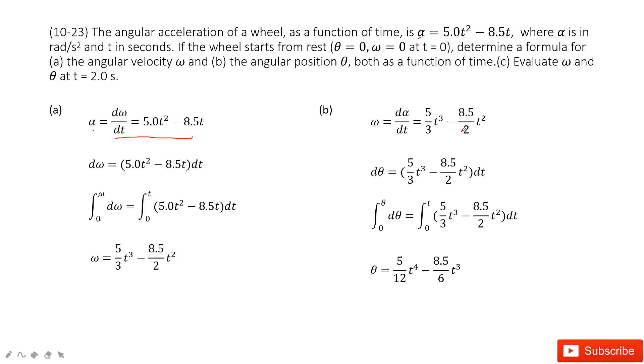The next one, we need to find the angular position theta as a function of time t. There, we can see omega is this one. So how can we get the angular velocity omega? It is d theta over dt.